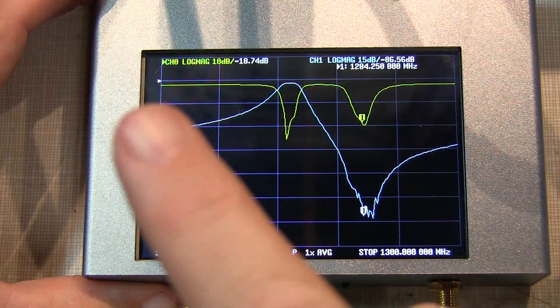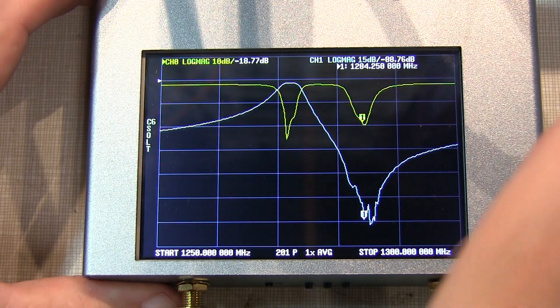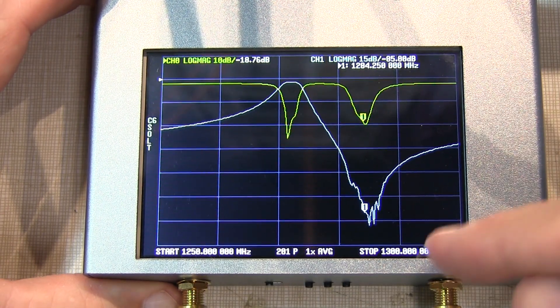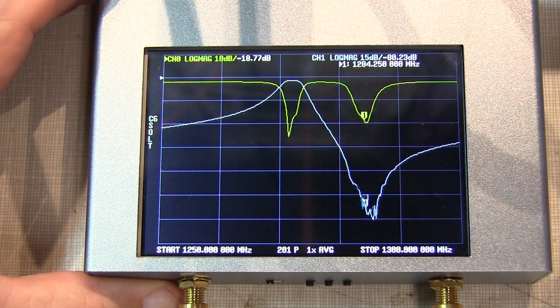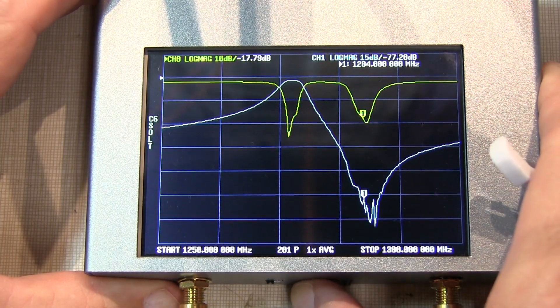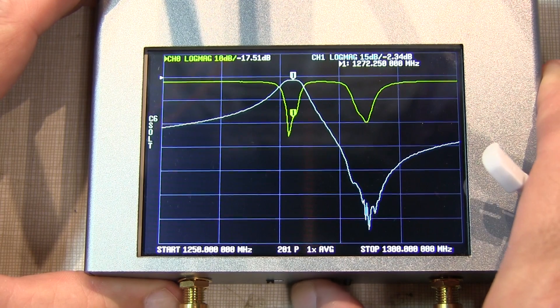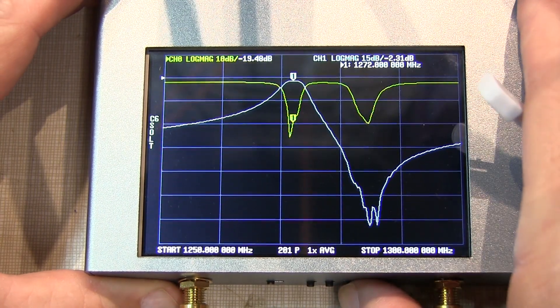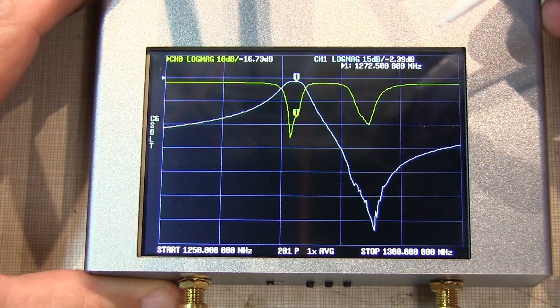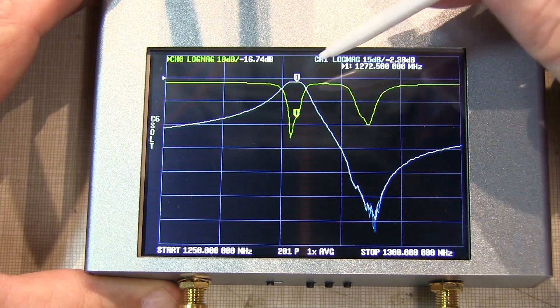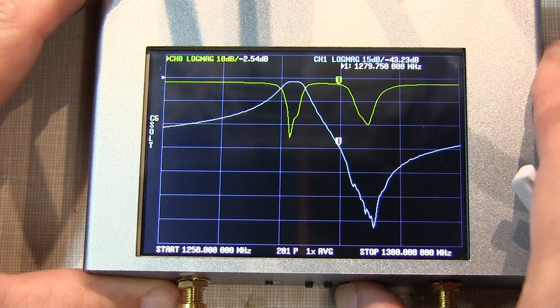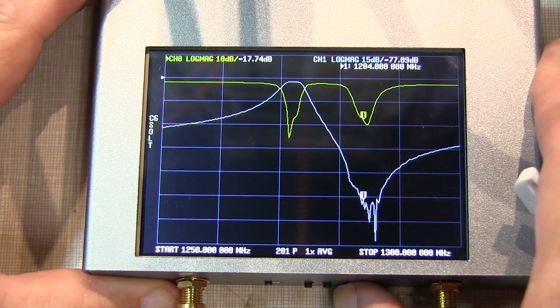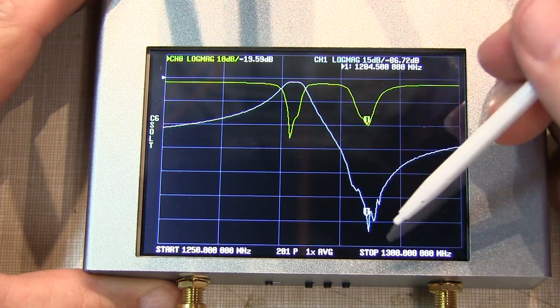Now I've moved the termination from the low side over to the high side, and moved my receive port over to the low side. We can see that the bandpass filter is centered, looks like 1272.5, a little bit on the low side. The notch is at 1284.5, where we were looking at the transmit side before.